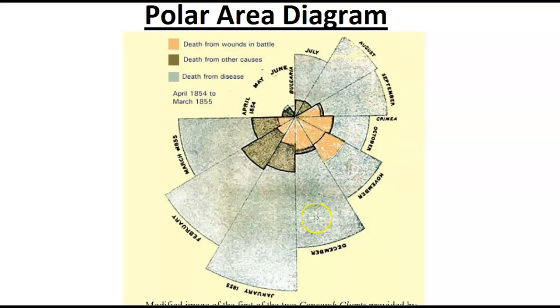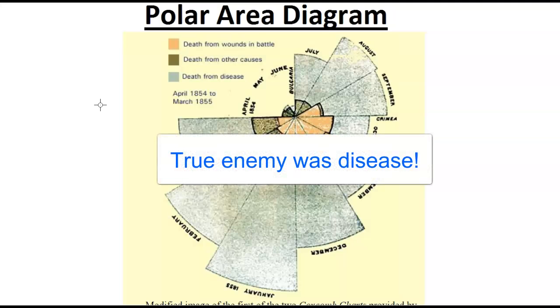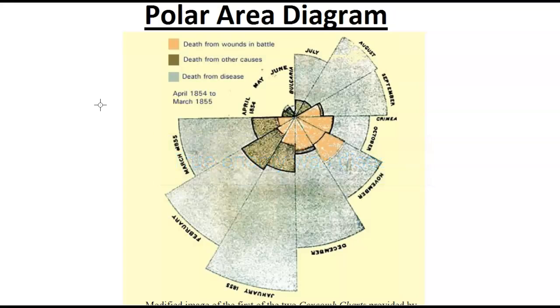And she could have just presented the numbers to everyone, but she realized that there was a lot of power in visualizing it this way. You could see that the gray area just dwarfs the other areas. So it really wasn't so much that the Russians that were the enemy. The real enemy was disease. So that is why she's also a hero of statisticians.